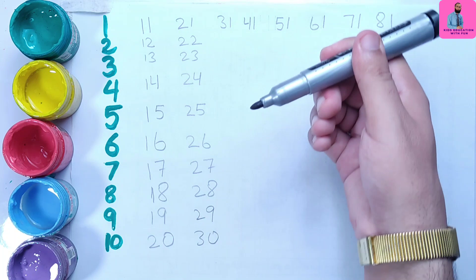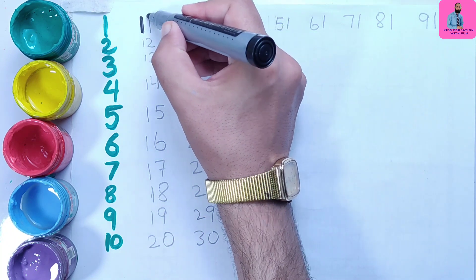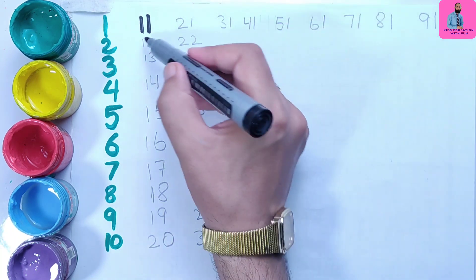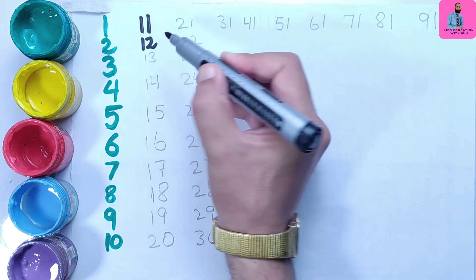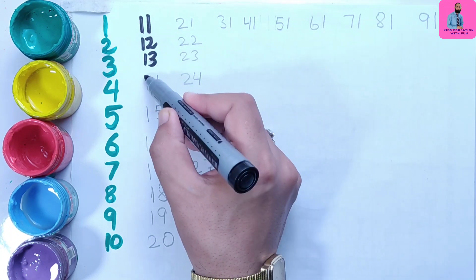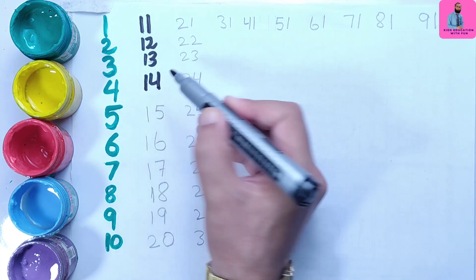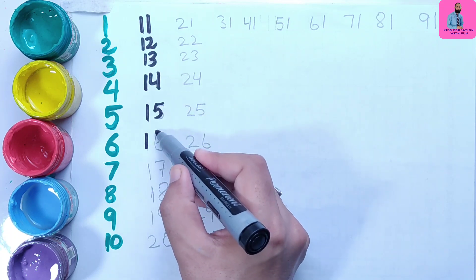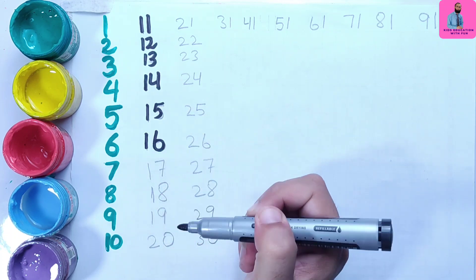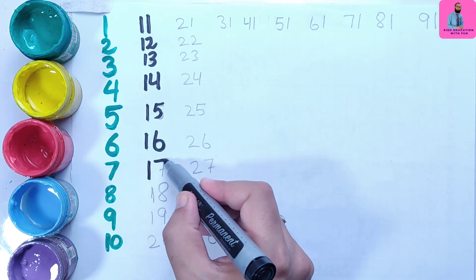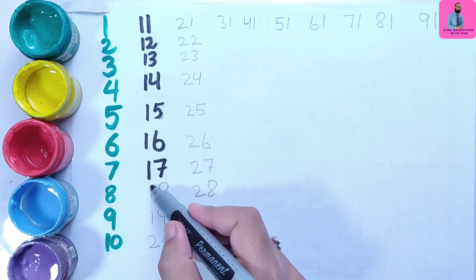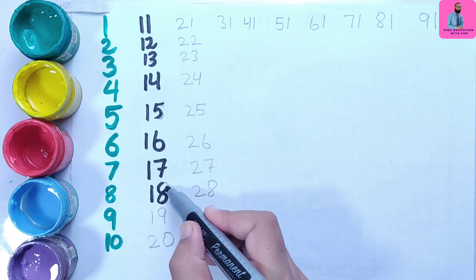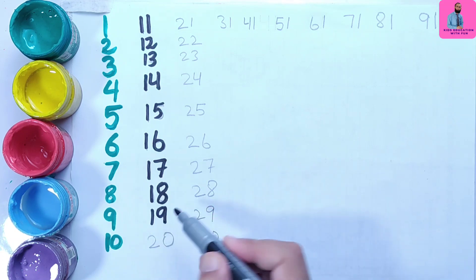Marker. Here we have black color. 11, 12, 13, 14, 15, 16, 17, 18, 19, 20.